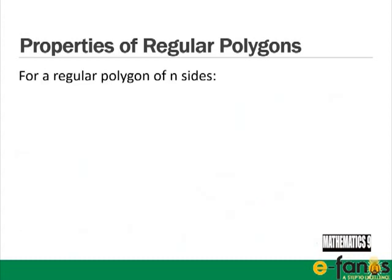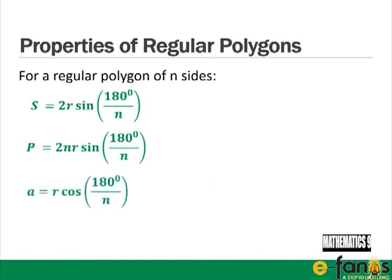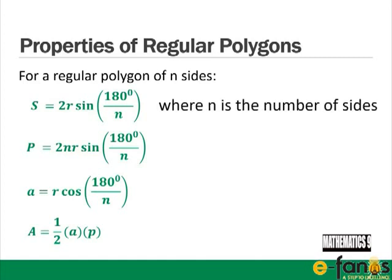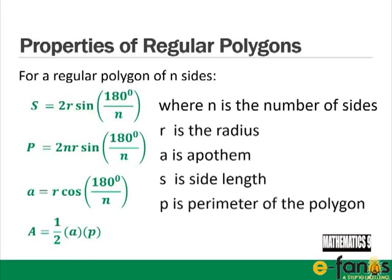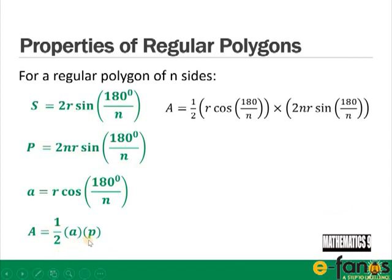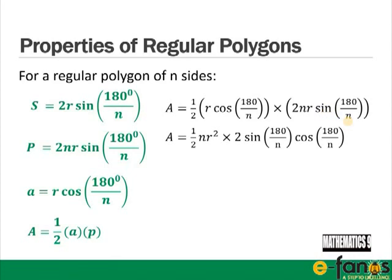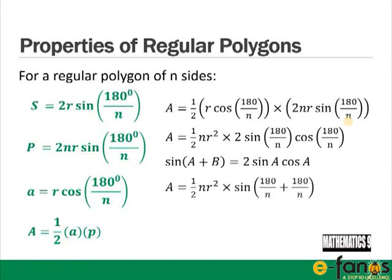Summary of formulas for a regular polygon of n sides with radius R: side length S = 2R sin(180/n), perimeter P = 2nR sin(180/n), apothem A = R cos(180/n), and area = ½AP. Substituting, the area simplifies to ½ × n × R² × sin(360/n).